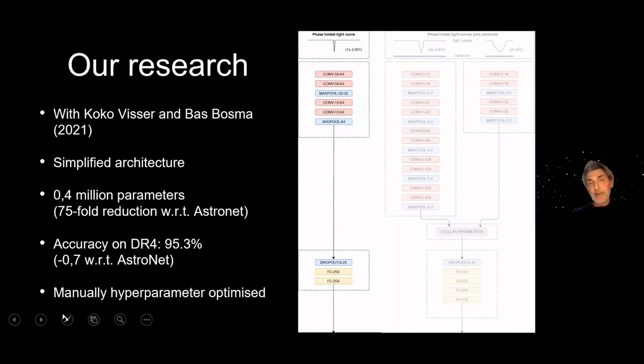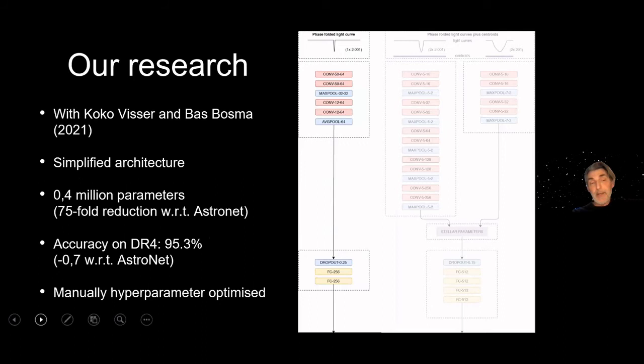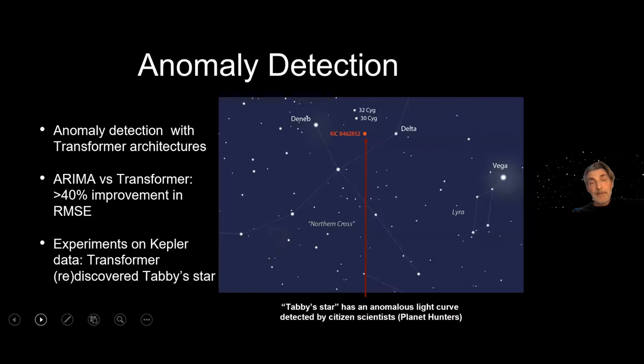Together with my colleagues Coco Visser and Bosma, we tried to simplify this network by reducing the number of parameters. The simplified architecture has a 70-fold reduction in parameters compared to AstroNet, as you can see it's much simpler, and it suffers in terms of performance by only 0.7%. We are trying to improve that further, but the hyperparameter optimization was not done with Google's resources — Coco Visser is a great researcher but can't compete with all those servers.